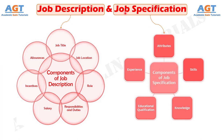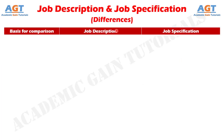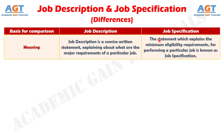So, let's look into the basic differences between job description and job specification in a tabular form. Difference number one: job description is a concise written statement explaining about what are the major requirements of a particular job, whereas the statement which explains the minimum eligibility requirements for performing a particular job is known as job specification.